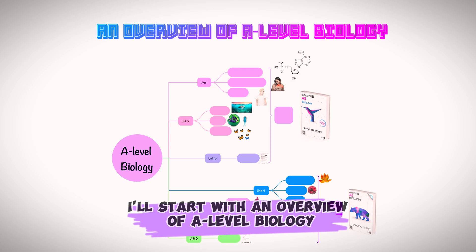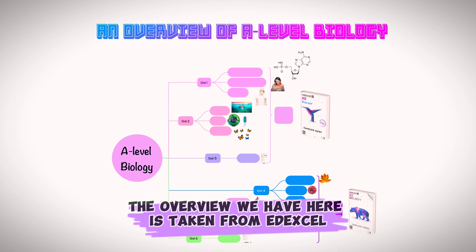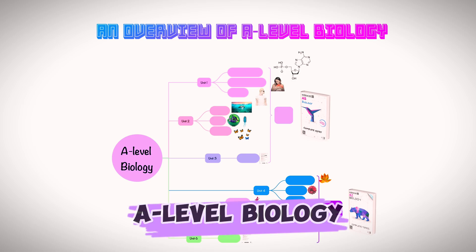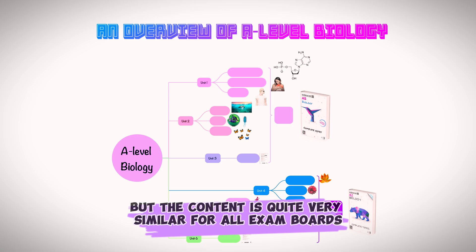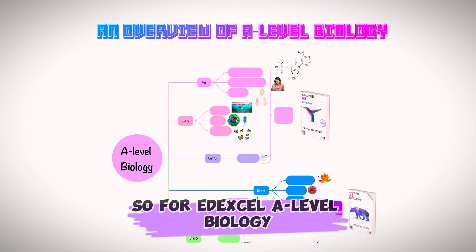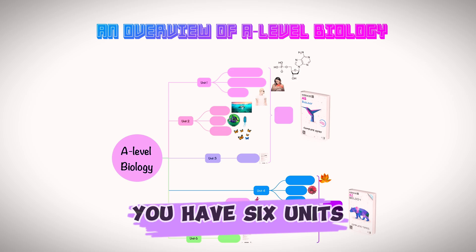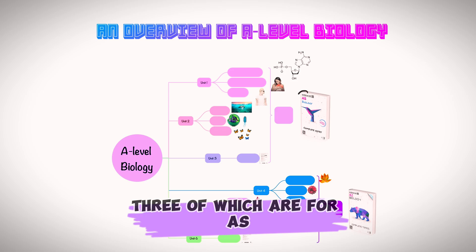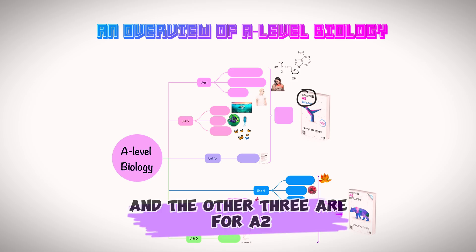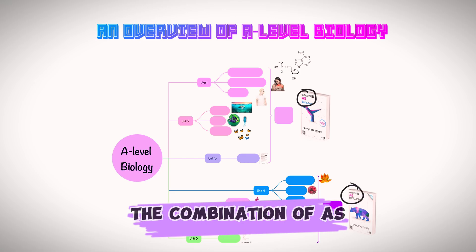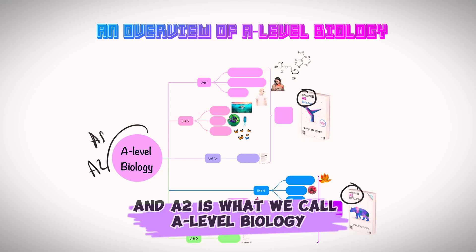The overview we have here is taken from EdExcel A-level biology, but the content is quite similar for all exam boards. For EdExcel A-level biology, you have six units — three for A-S and the other three for A-2. The combination of A-S and A-2 is what we call A-level biology.